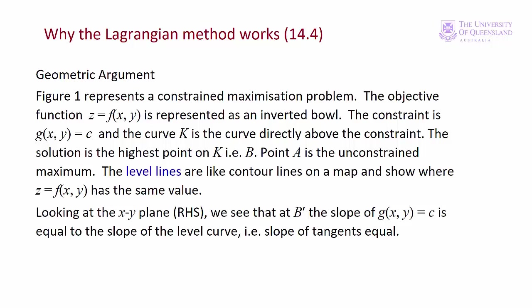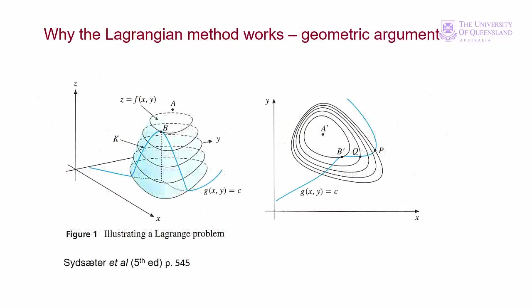Now that we have a better understanding of the Lagrange multiplier, let's look at why the Lagrangian method works. The objective function is a concave function. We have the constraint, and the curve k shows the value of the objective function directly above the constraint — basically that's our Lagrangian. The maximum point of the constraint function is b, while a is the unconstrained maximum.